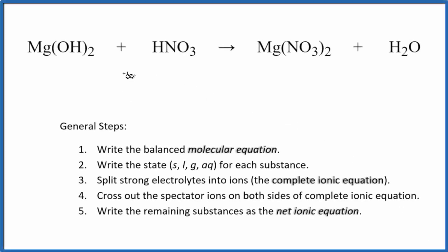In this video we'll write the net ionic equation for Mg(OH)2 plus HNO3. This is magnesium hydroxide and then we have nitric acid.